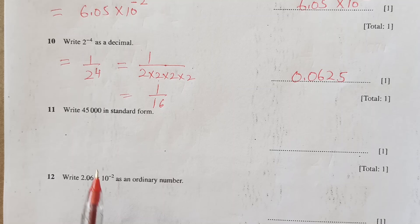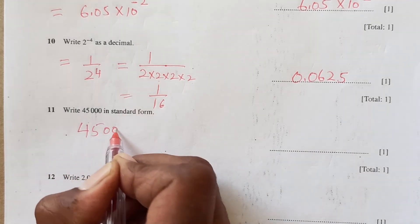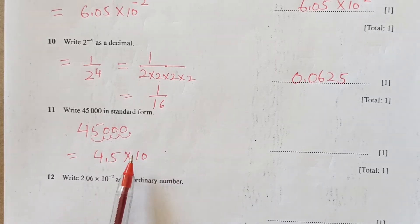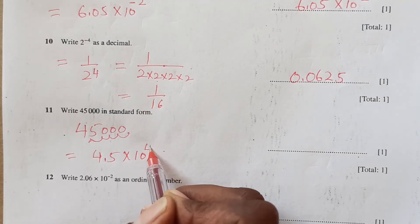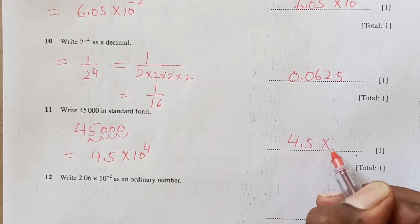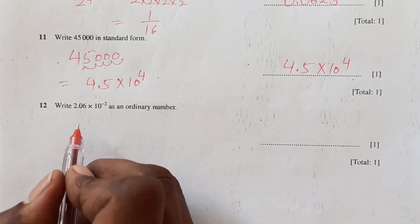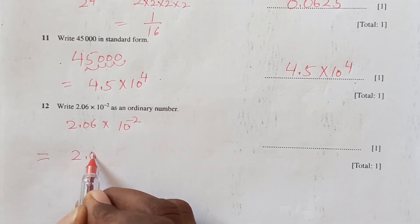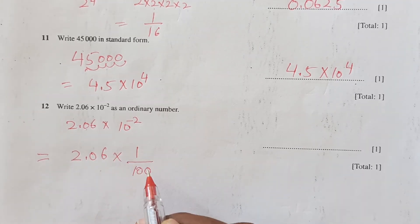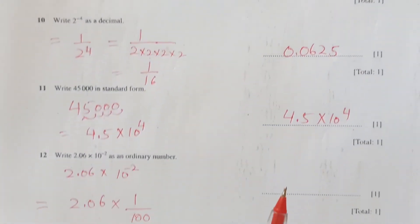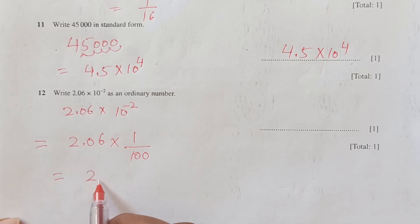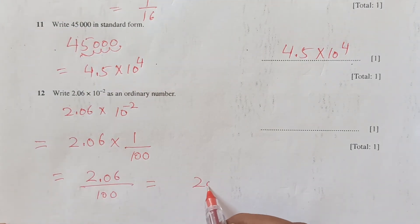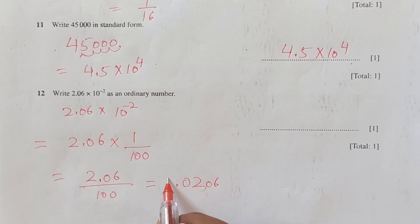Write 45,000 in standard form. The decimal place is at the end, so moving 1, 2, 3, 4 places to the left gives 4.5 × 10^4. Since we are moving towards the left, the power is positive. So the answer is 4.5 × 10^4. Next: write 2.6 × 10^(negative 2) as an ordinary number. 10^(negative 2) = 1 over 100, so 2.6 over 100 means the decimal moves 2 places, giving 0.026.